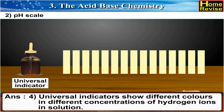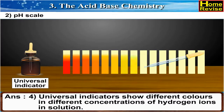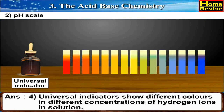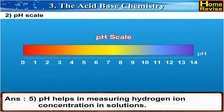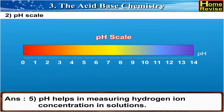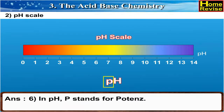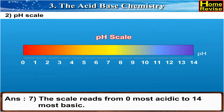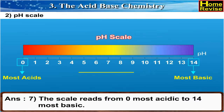Universal indicators show different colors in different concentrations of hydrogen ions in solution. pH helps in measuring hydrogen ion concentration in solutions. In pH, P stands for potence. The scale reads from 0, i.e. most acidic, to 14, i.e. most basic.